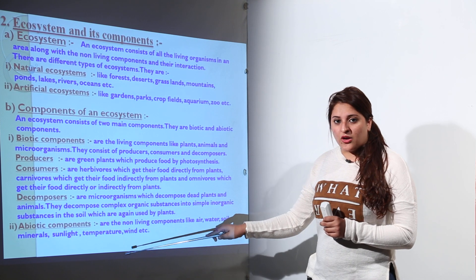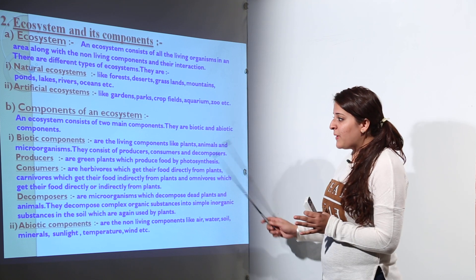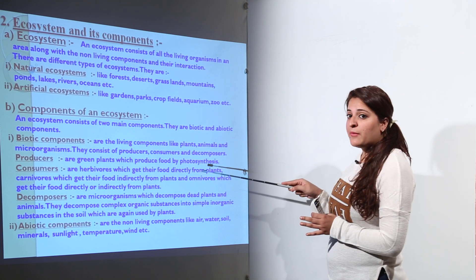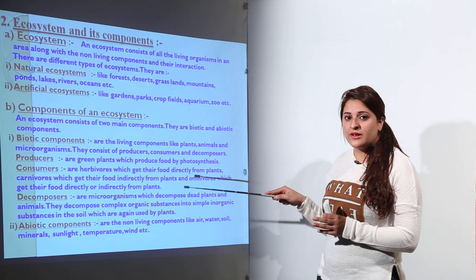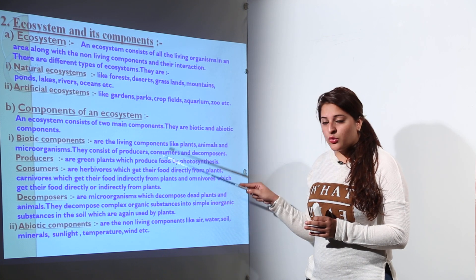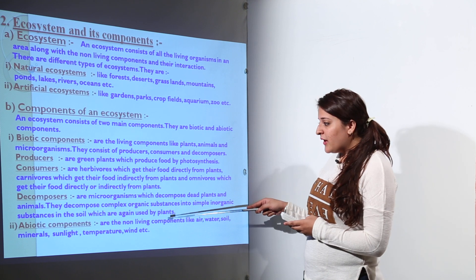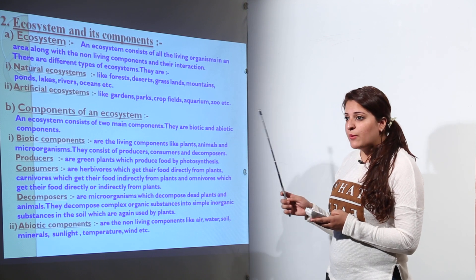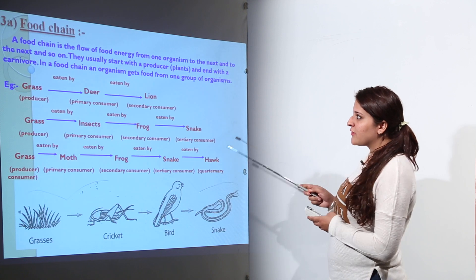Moving on to abiotic components, which are non-living components. Plants require many non-living components for photosynthesis. These non-living components include sunlight, temperature, air, and minerals. All of these are the abiotic components of the ecosystem.